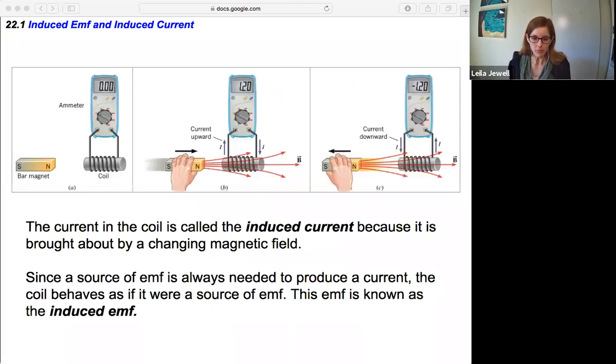A few more notes here. The current that is in the coil from the motion of the magnet is called the induced current, because it's brought about by this changing magnetic field. It wasn't created by a battery or some power supply; it was just induced by a changing magnetic field.